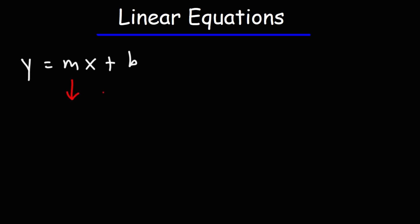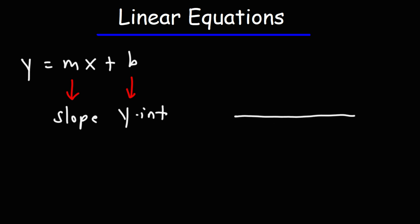In this equation, M represents the slope of the line, and B is the y-intercept. Let's briefly talk about the intercepts.